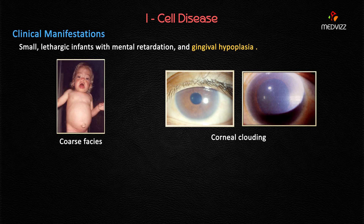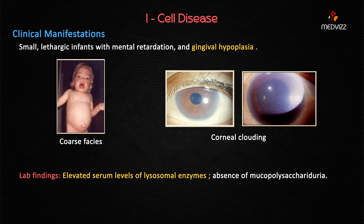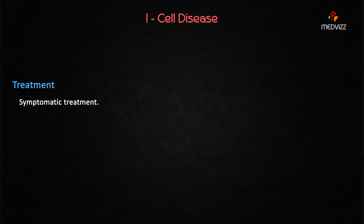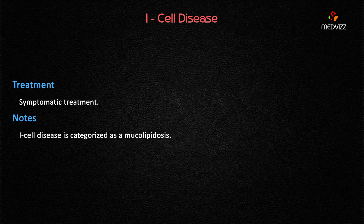Gingival hypoplasia and coarse facies, along with constitutional symptoms of being small and lethargic with mental retardation, characterize I-cell disease. Lab findings show greatly elevated serum levels of lysosomal enzymes and absence of mucopolysaccharide in the urine, because mucopolysaccharides accumulate outside the cell and cannot be metabolized. There is no specific treatment available — only symptomatic treatment. I-cell disease falls under the category of mucolipidosis.